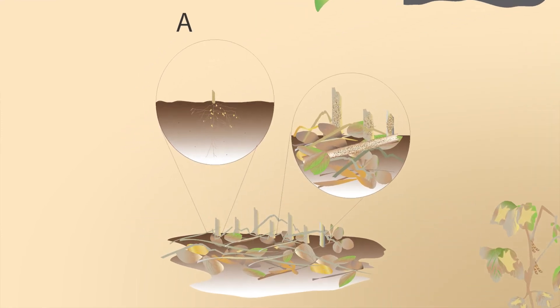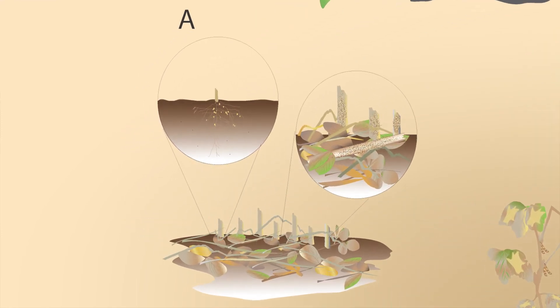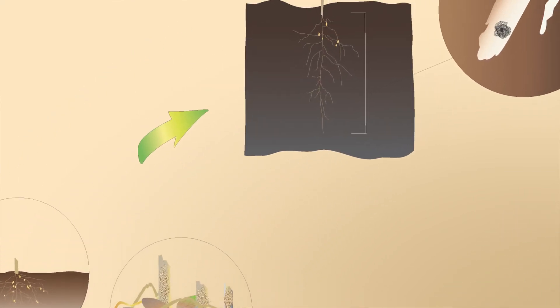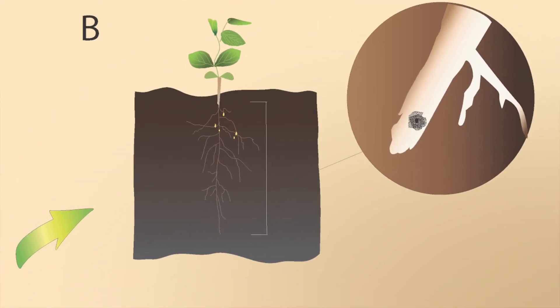This fungus survives in soil or soybean residue as microsclerotia, which are tiny dark-colored overwintering structures. Soybean is infected when the roots come into contact or grow close to those microsclerotia, which then germinate and form structures that will penetrate the root tissue.